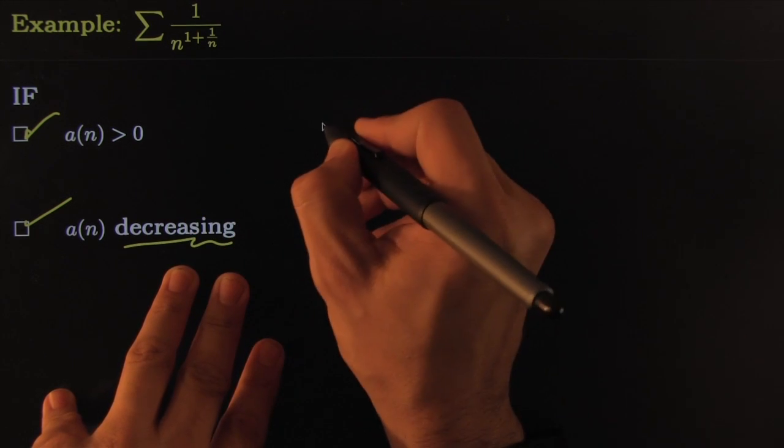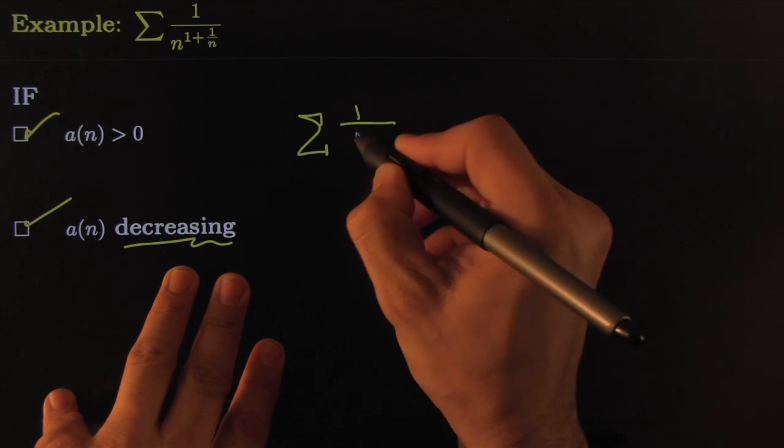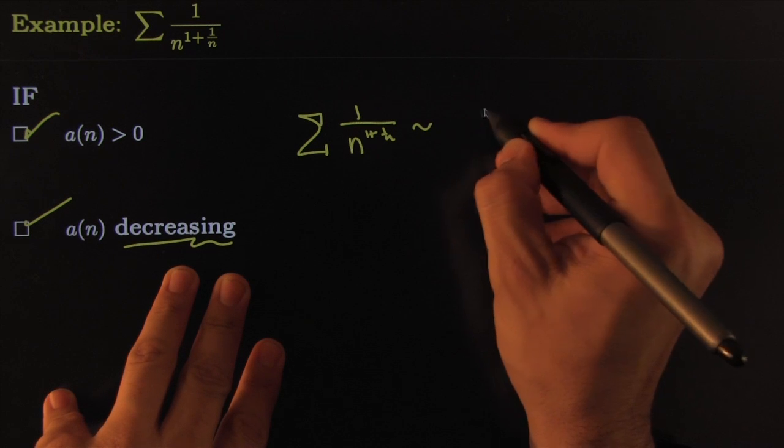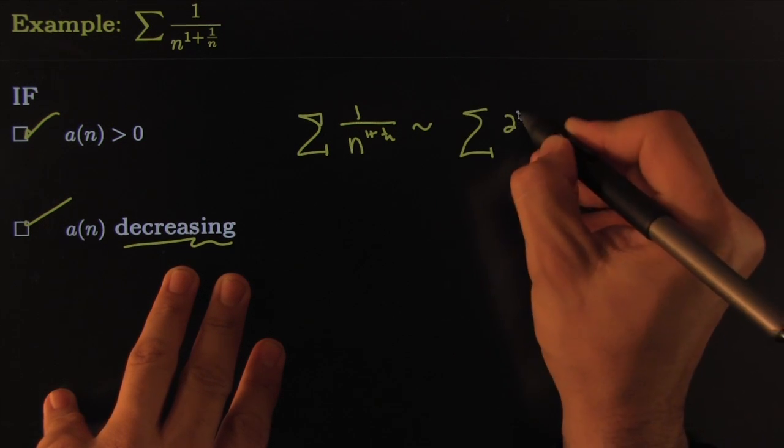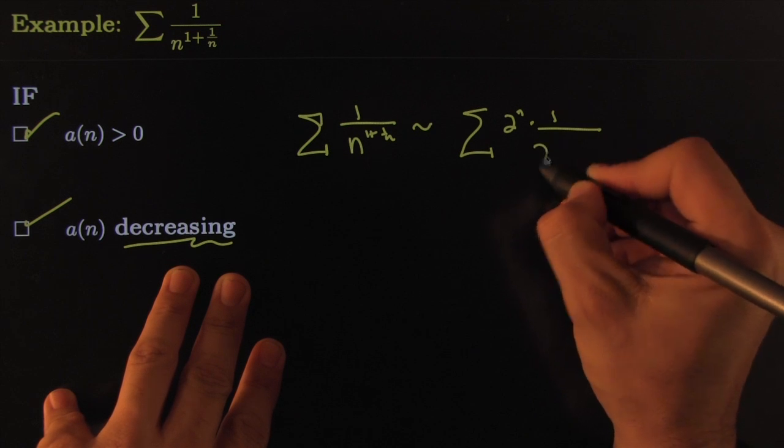Now applying the condensation test, I would say that 1 over n to the 1 plus 1 over n behaves just the same way as 2 to the n times 1 over 2 to the n raised to the 1 plus 1 over 2 to the n.